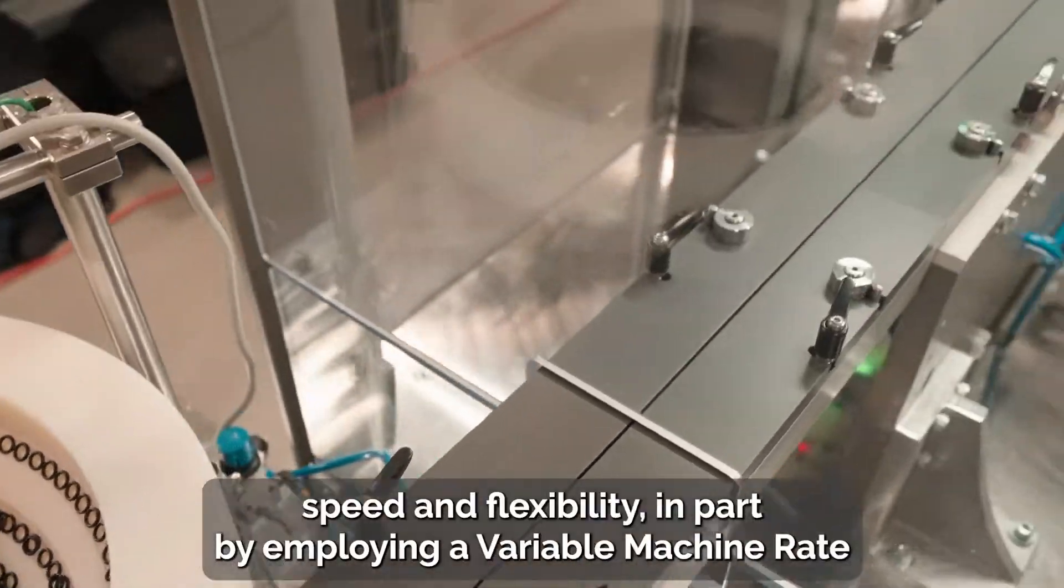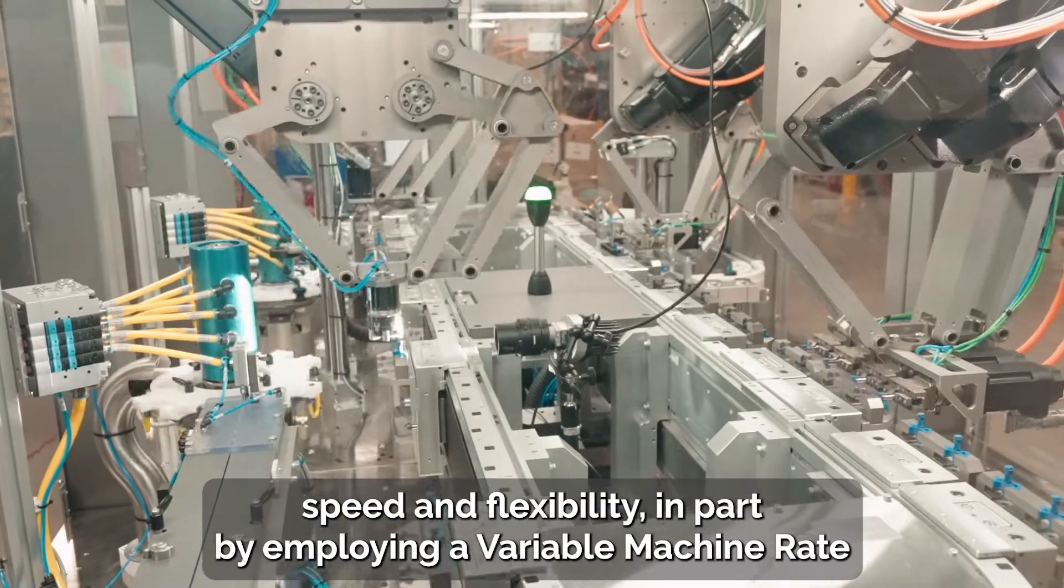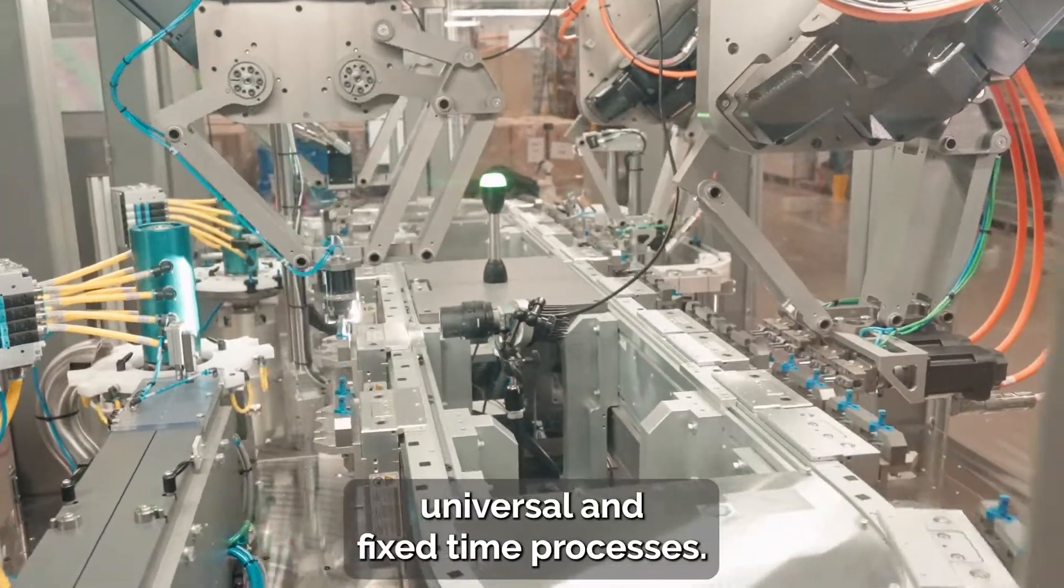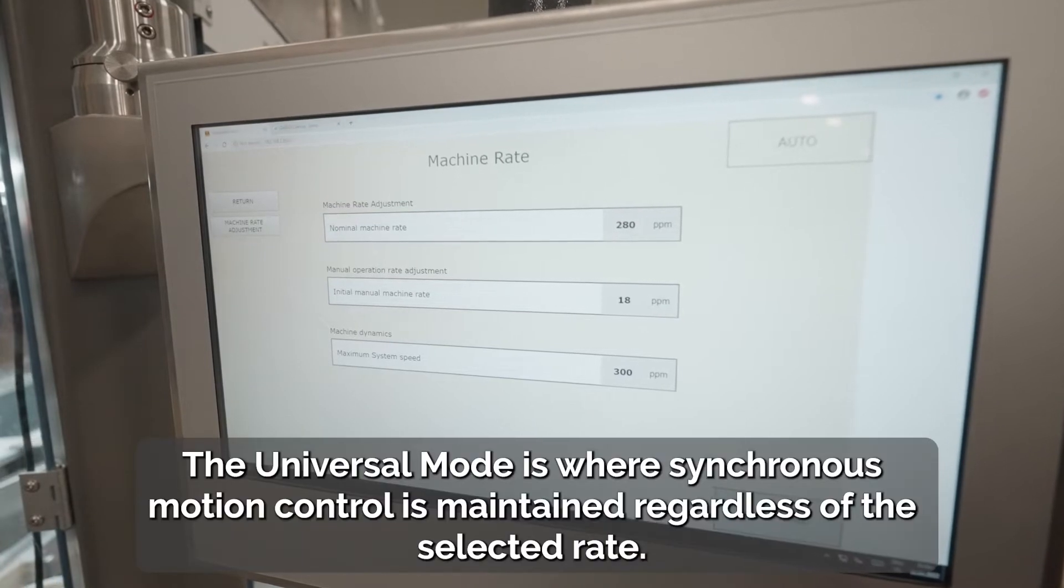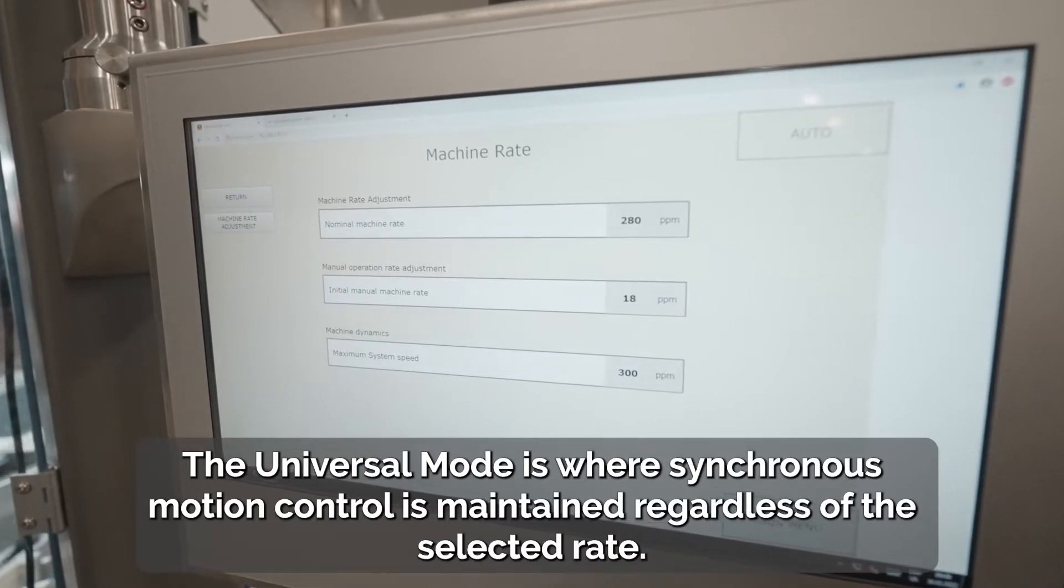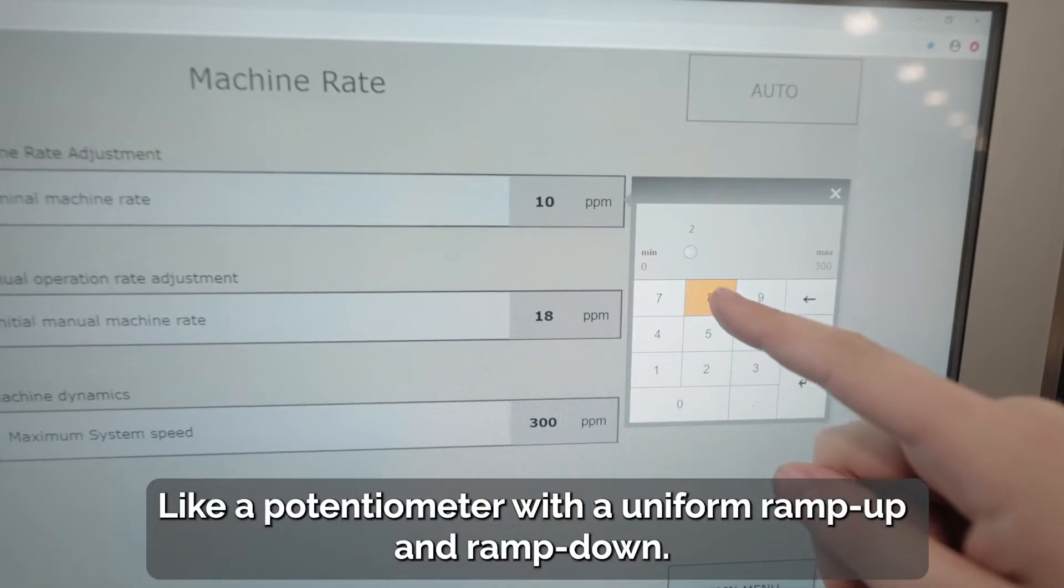Symphony accomplishes speed and flexibility in part by employing a variable machine rate in two modes: universal and fixed time. The universal mode is where synchronous motion control is maintained regardless of the selected rate, like a potentiometer with a uniform ramp up and ramp down.